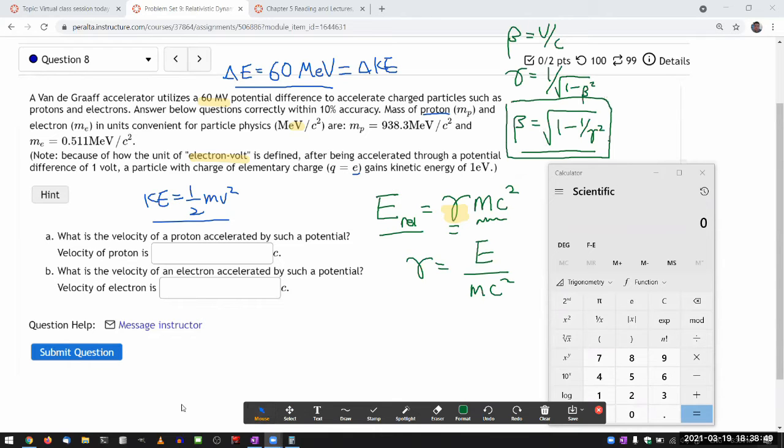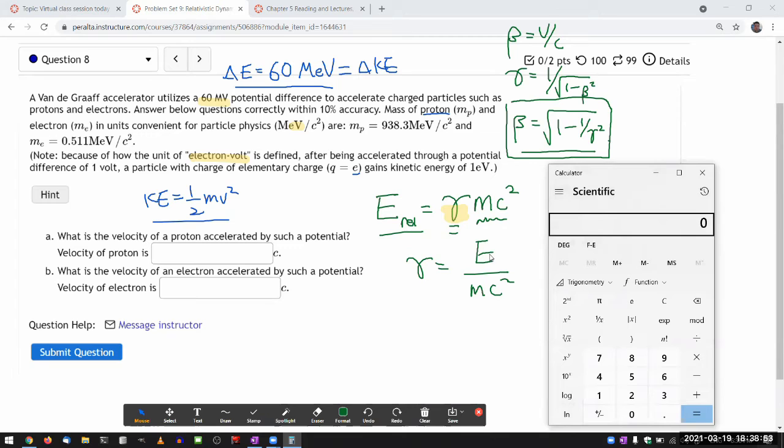So let's go through this. So the total relativistic energy of proton is going to be the rest energy, 938.3, plus the change in the energy coming through, having accelerated through the electric potential difference. So 60.